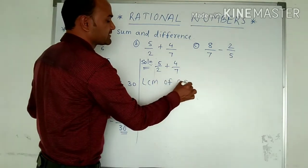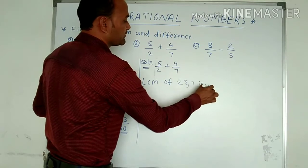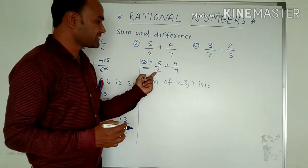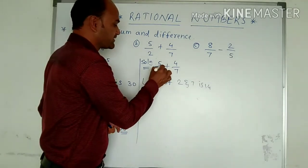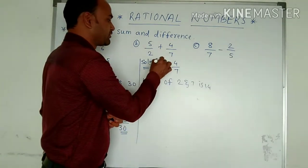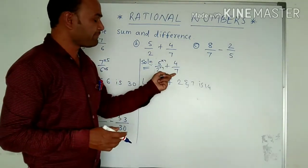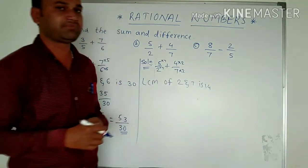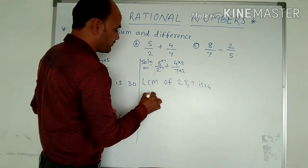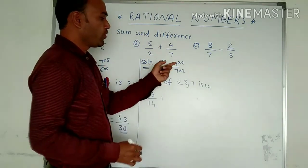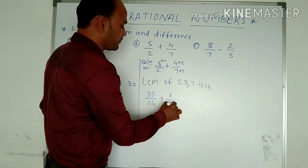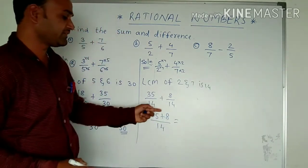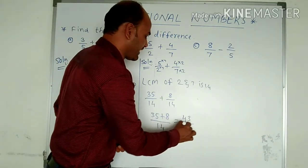The LCM of 2 and 7 is 14. We need to make both denominators equal to 14. Multiplying accordingly: 5 times 7 is 35 divided by 14, plus 4 times 2 is 8 divided by 14. Now we get 35 plus 8 divided by 14, so 35 plus 8 becomes 43 divided by 14 is our answer.